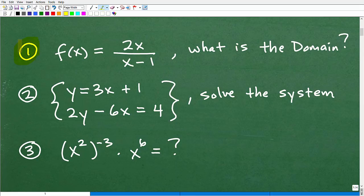But let's get to our problems here. Let me explain the problems. And I will tell you what I think is an appropriate time limit for you to get these problems correct. All right, so our first question is we have this function f(x) equals 2x over x minus 1. I'd like you to tell me what the domain is. Number 2, I have this system. I want you to solve the system. And number 3, I have this expression going on. I want to know what this is equal to.